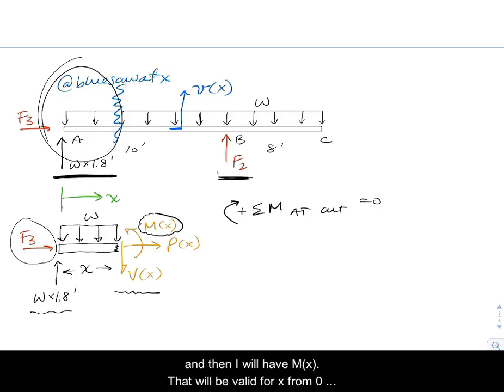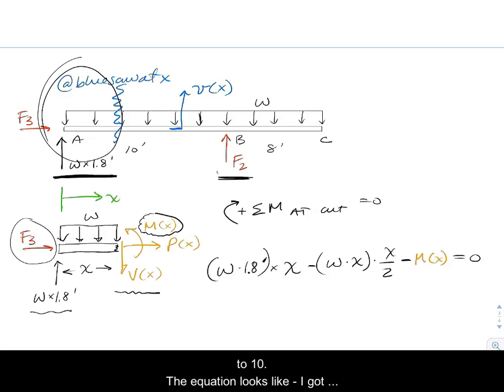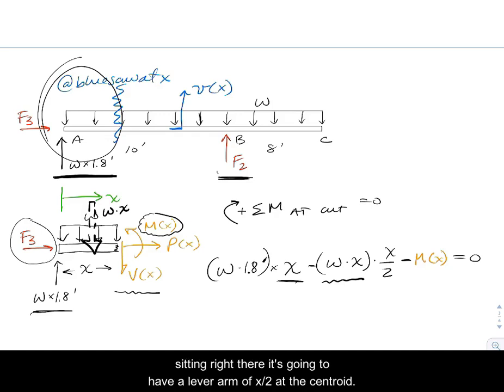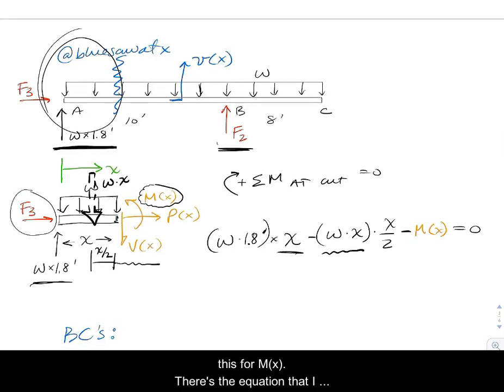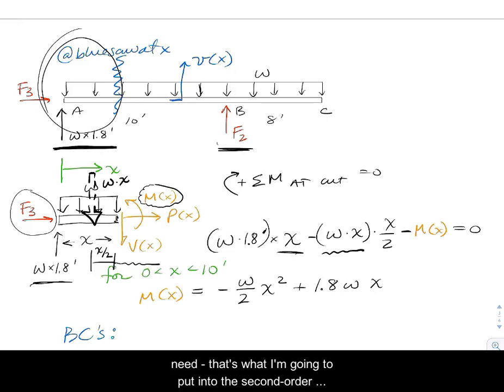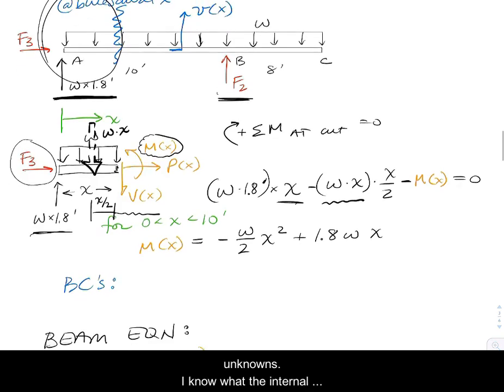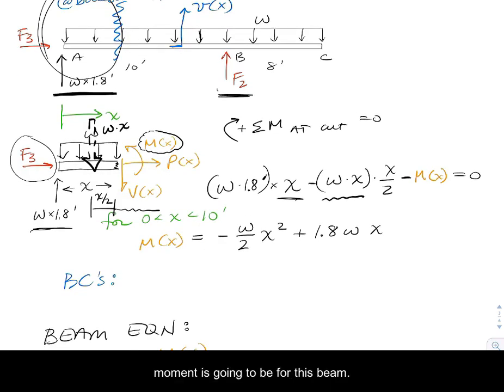The equation looks like I've got the force times its lever arm of x. I'm going to use a statically equivalent representation of the distributed load with a value of W times x sitting right there. It's going to have a lever arm of x over 2 at the centroid, and then I've got minus m of x. So I can solve this for m of x. There's the equation that I need, that's what I'm going to put into the second order beam equation. In a determinate beam there will be no red arrows in there. I won't have any unknowns. I know what the internal moment is going to be for this beam.